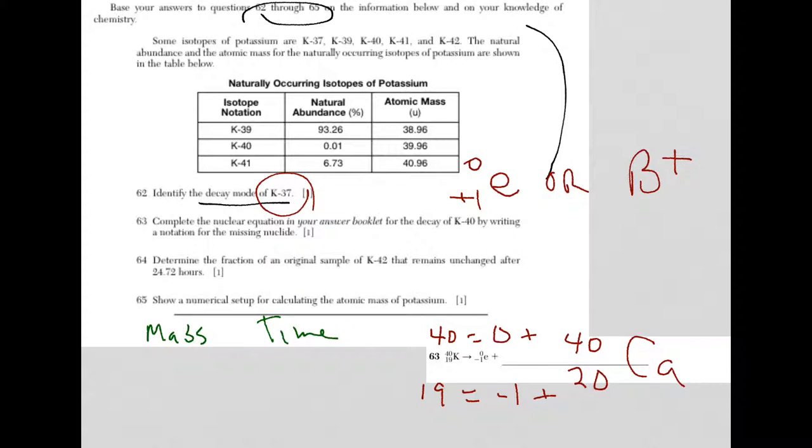You're looking for the fraction of the original sample. So what you're doing is you're going to start with a mass of 1. So that's at time 0. Every time you hit a half-life, now what happens is that you have half of what you started with. So half of 1 is a half. So now we have to take a look. 24.72 hours. Now that's the total time. And we want to figure out what's the mass remaining then.